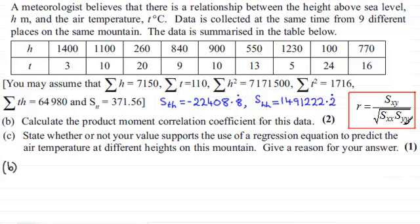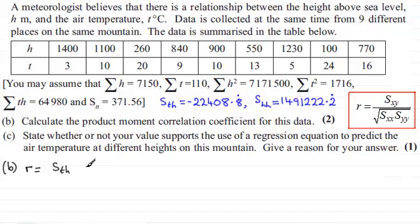As I pointed out in part A of this question, we're not dealing with X's and Y's here — X is H and Y is T. So we can translate these values to STH and SHH. R would be equal to, instead of SXY, it would be STH, and it's divided by the square root of, instead of SXX, that will be SHH, multiplied by, instead of SYY, STT.